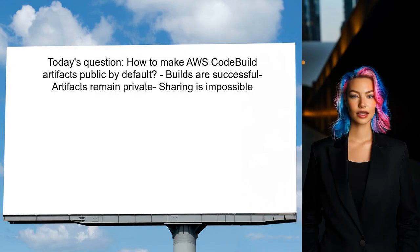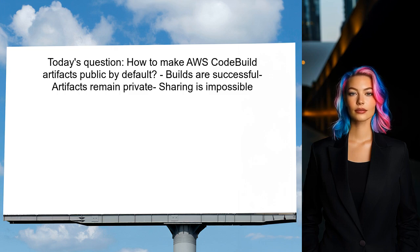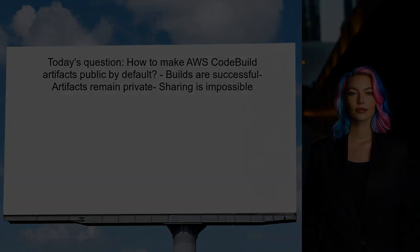Here's the specific question we're addressing today. One user asked how to make the artifacts uploaded to S3 as part of AWS CodeBuild public by default. They mentioned that while their builds are successful, the artifacts remain private, making sharing impossible. Sound familiar? Let's dive into the details.